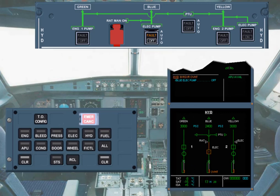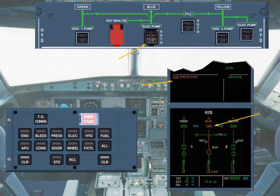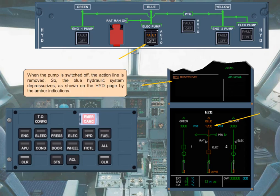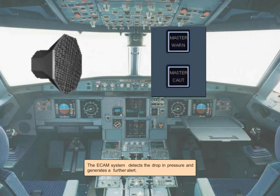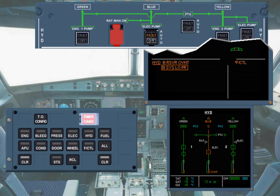When the pump is switched off, the action line is removed. The blue hydraulic system depressurizes, as shown on the hydraulic page by the amber indications. The ECAM system detects the drop in pressure and generates a further alert. There is now a new abnormal message on the engine warning display: blue system low pressure. The message is boxed to indicate that the loss of the blue hydraulic system is classed as a primary failure that will affect other systems.